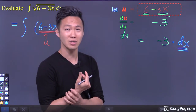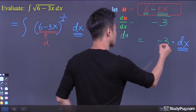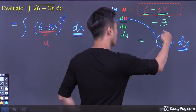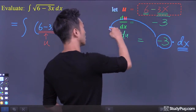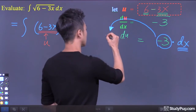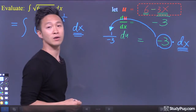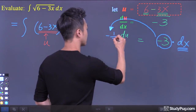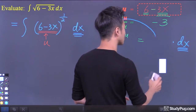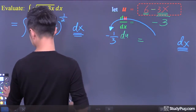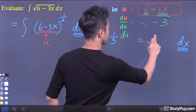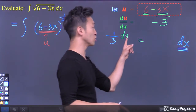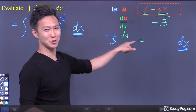It's always easy to deal with a constant — we can always move a constant around. So in this case, we can simply move negative 3 to the other side of the equation. Whenever we move a constant to the other side, that constant becomes its reciprocal. The reciprocal of negative 3 is 1 over negative 3, which is simply negative 1 over 3. So dx equals negative 1 over 3 du.